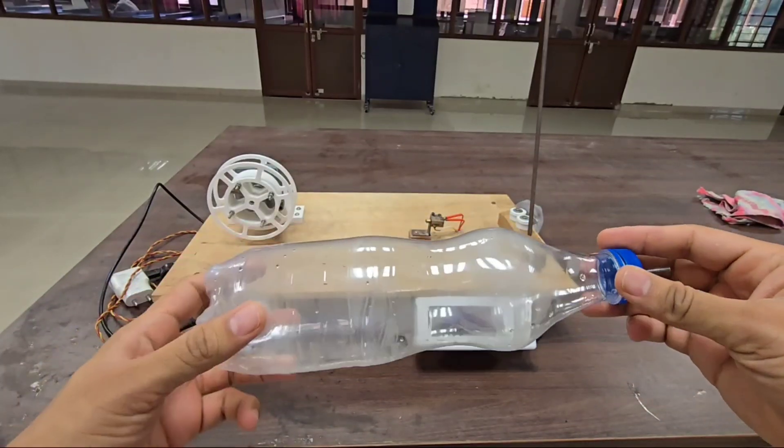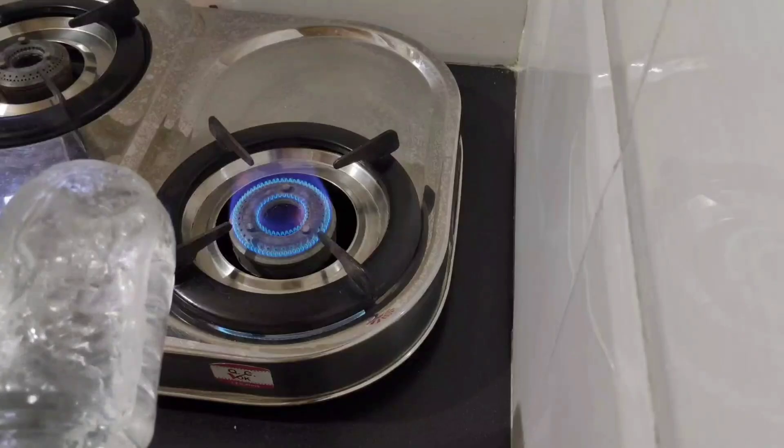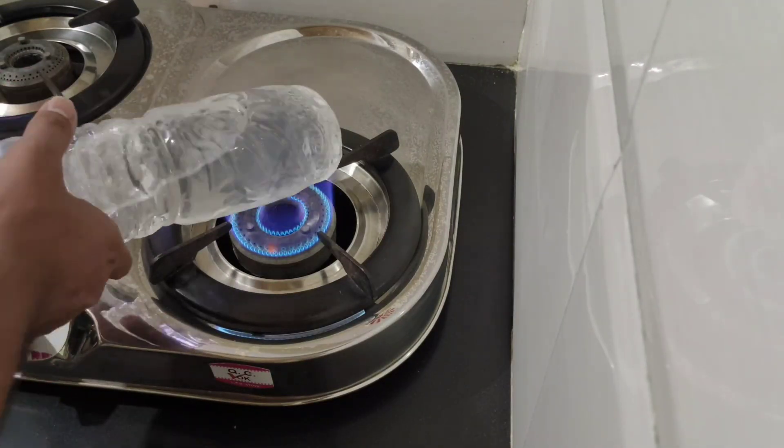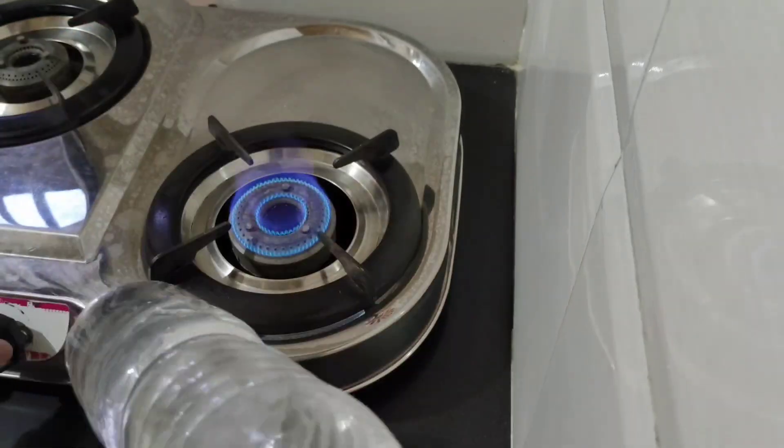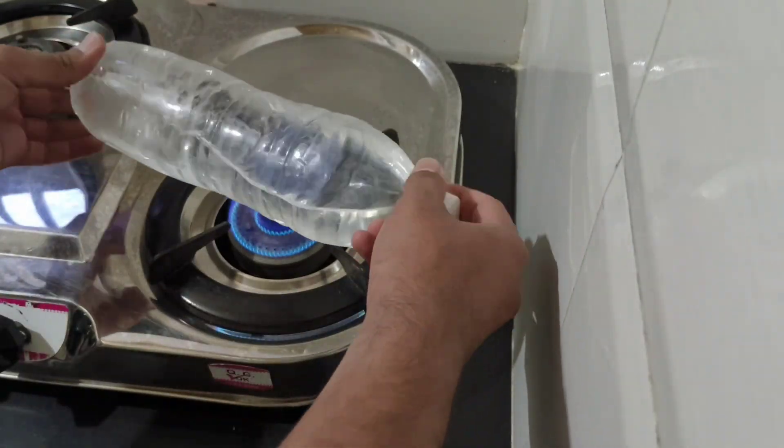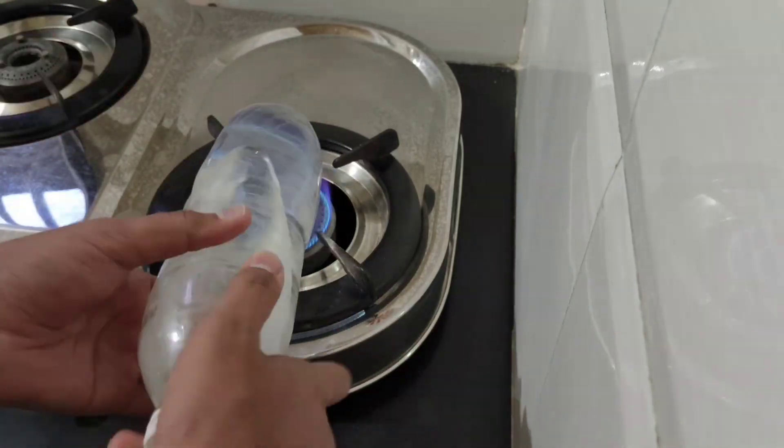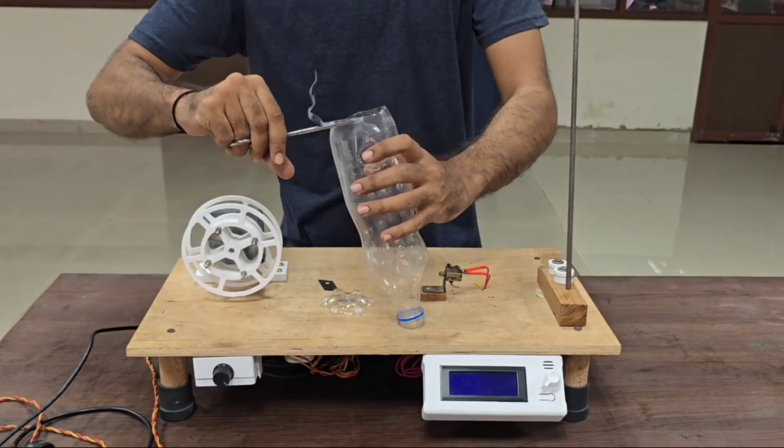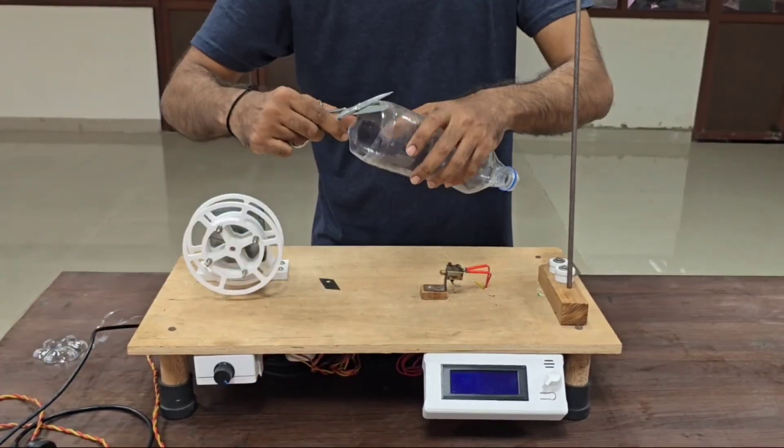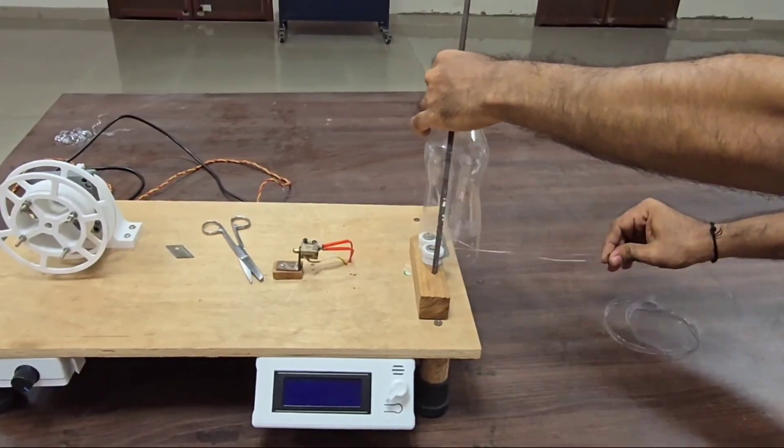The most simplest and accessible way is by using a gas stove. This was already shown in the previous video on the PET machine. Now cut the bottom bottle portion and insert it into the stripper. Pull the strip at a uniform rate.